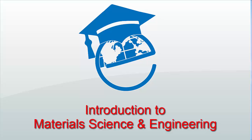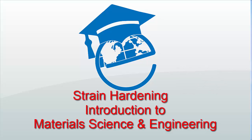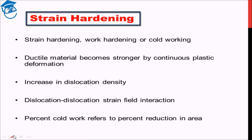In the previous lecture, we discussed two mechanisms for strengthening of materials: grain size reduction and solid solution strengthening. Today we will see the third type of mechanism that can be used for strengthening of material. Today's focus will be on what is known as strain hardening, which is alternatively known as work hardening or cold working.